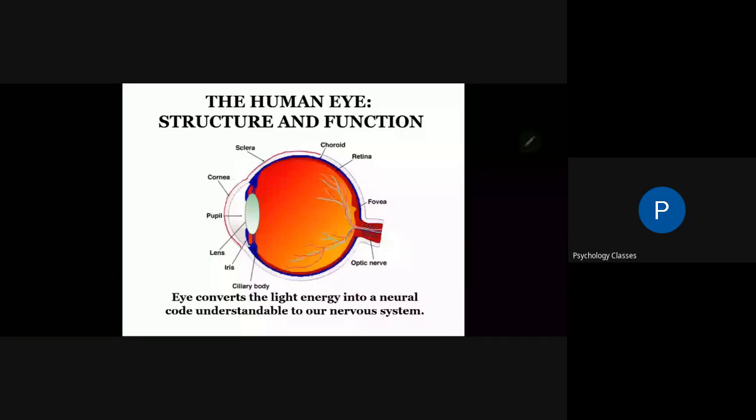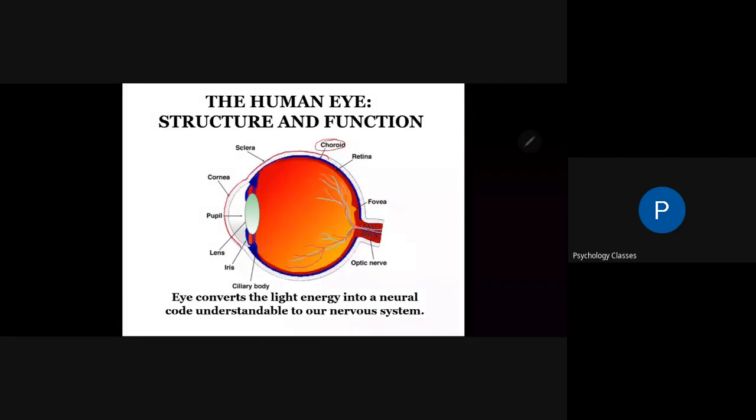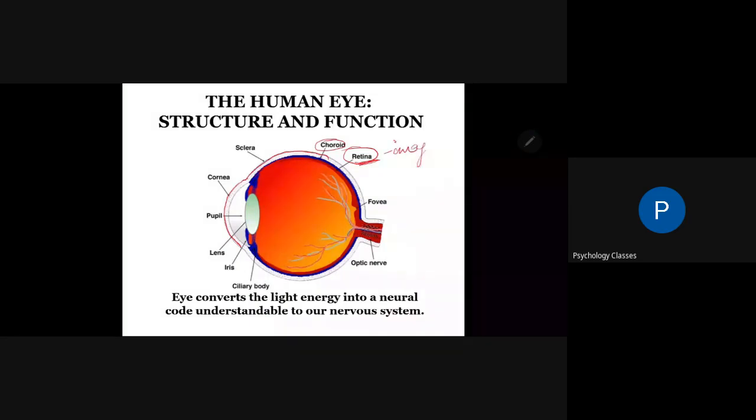Inside the sclera, you can see a blue colored line which is known as the choroid, and then inside the choroid, there is your retina. Retina is the area where the actual image of whatever visual stimulus that we get, the image is formed at the retina.